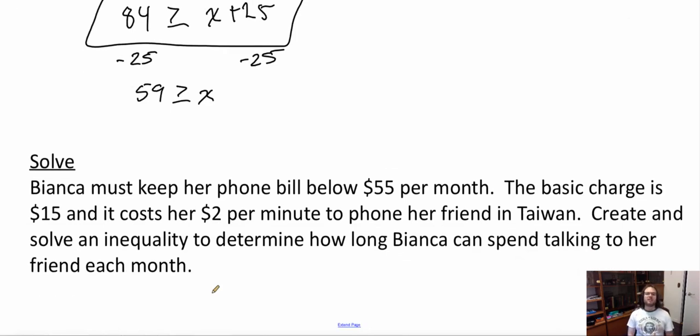Let's take a look at my next one. It says, Bianca must keep her phone bill below $55 a month. So we have the max. It must be below $55 a month. So, we're going to have 55, and that must be the biggest. And it cannot equal. The basic charge is $15 and it costs her $2 per minute. So, we have $15, and then we have plus 2 per minute times the minutes. We already created the inequality by reading out my equation here.